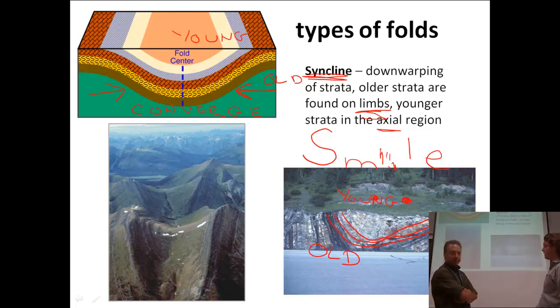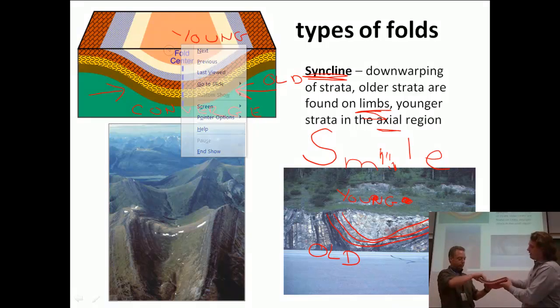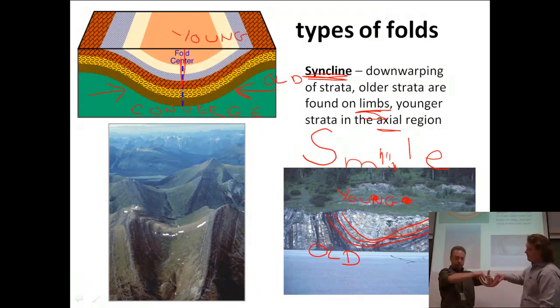The axial region. This is something that we're going to start talking about symmetry here. If I were to draw a line right in the middle of this syncline, each side of the syncline is a mirror image of itself. That means that it's symmetrical, kind of like if you look straight down the middle of a person, you have symmetry from one side to the other.